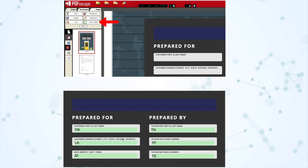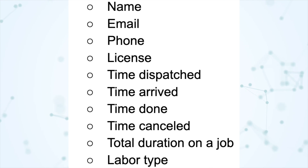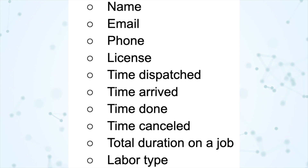Next, under Forms, we have some new technician smart fields for PDF forms. Smart fields are those things that auto-populate information into your forms — specifically PDF forms where you upload a PDF with certain codes in the fillable sections. The following technician information can now be added from a timesheet using smart fields: name, email, phone number, license number, time dispatched, time arrived, time done, time canceled, total duration on the job, and labor type. There are also new smart fields for service materials and equipment — you can now retrieve the name, code, description, and price for materials, equipment, and services from an invoice.